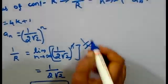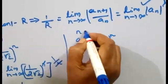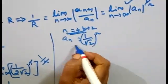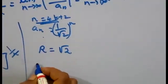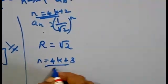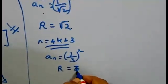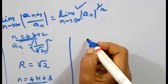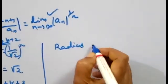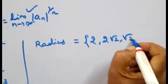For n equal to 4k+2, a_n equals (1/√2)^n, and in this case R is easier to calculate: R equals √2. For the fourth case, n equal to 4k+3, a_n equals (1/3)^n. The value equals (1/3)^n. So four radii of convergence exist: R equals 2, 2√2, √2, and 3.